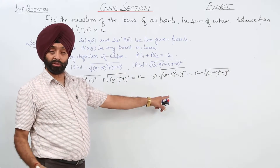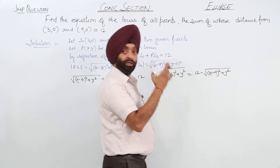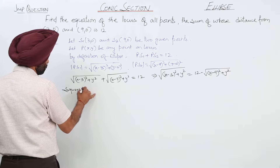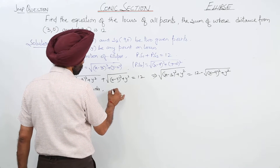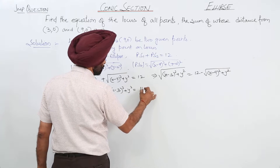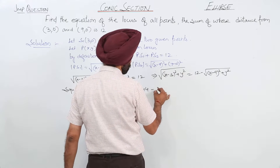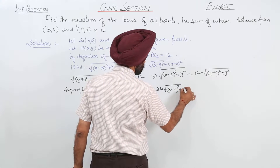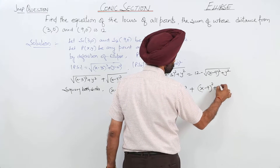Now we are squaring this to remove the square root. Squaring both sides — remember this becomes an (a minus b) whole square — we get: (x minus 3) whole square plus y square equals 144 minus 24 times square root of (x minus 9) whole square plus y square, plus (x minus 9) whole square plus y square.